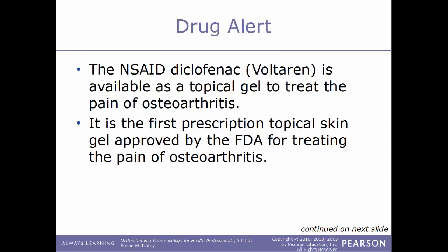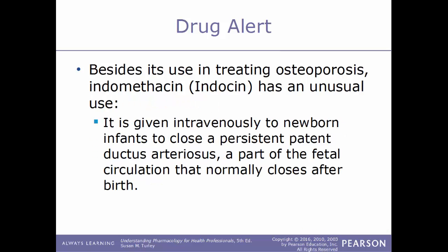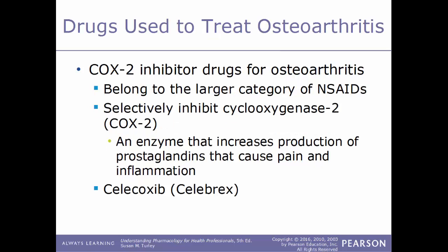A drug alert: the NSAID diclofenac is available as a topical gel to treat the pain of osteoarthritis — it was the first prescription topical skin gel approved for this purpose. Another drug alert: besides its use in treating osteoarthritis, Indocin has an unusual use — it is also given intravenously to newborn infants to close a persistent patent ductus arteriosus. This structure is found only in the developing fetus in utero and should normally close once the baby is born; when it doesn't, it must be corrected through medications, surgery, or both.